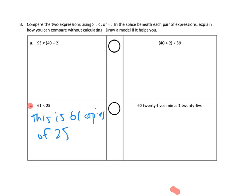What is this on the right-hand side? Well, it's 60 copies of 25 minus 1 copy of 25. Well, that's 59 copies of 25. I'm going to say this is 59 copies of 25.